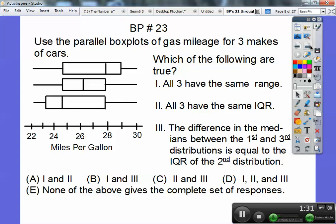Use the parallel box plots of gas mileage for three makes of cars. Which of the following are true? All three have the same range. Your range are your whiskers, so it's the small number and the big number. They do look like they have all three the same range, so that one's true. All three have the same IQRs. They don't have the same IQRs because this IQR looks smaller right here.